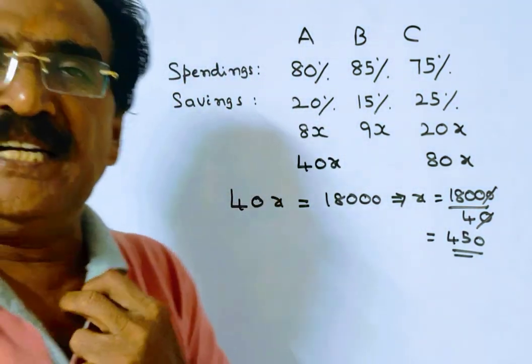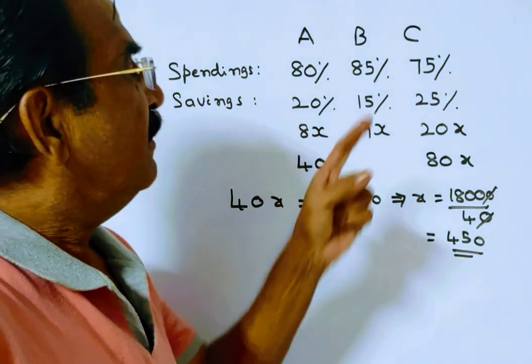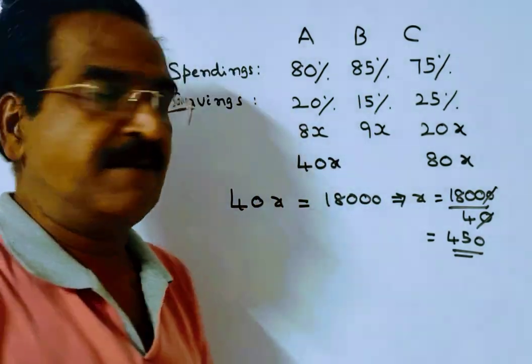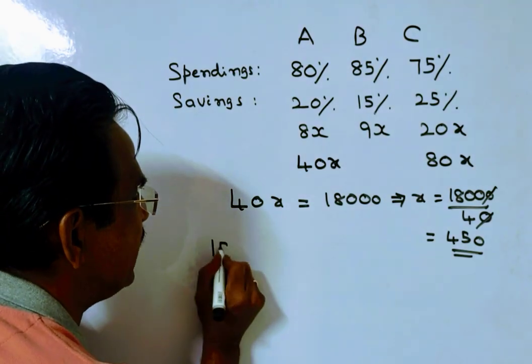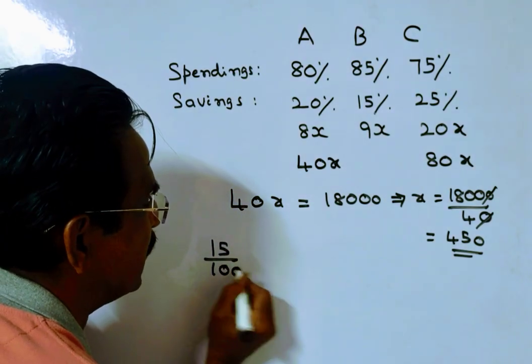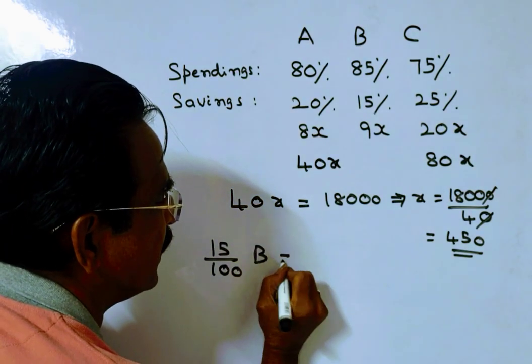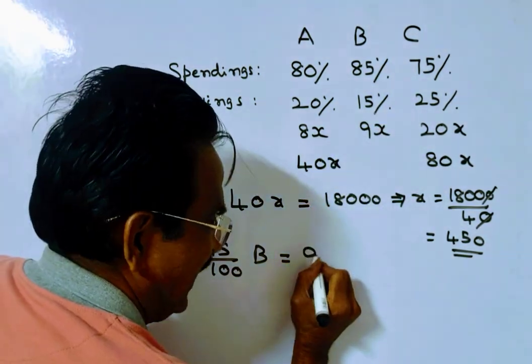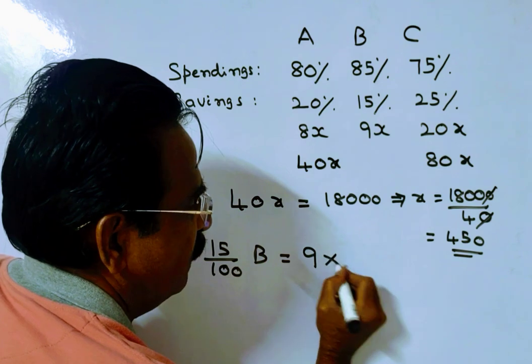Friends, now we have to find the income of B. 15% of B's income is his savings. What is his savings? 9x. X is equal to 450.